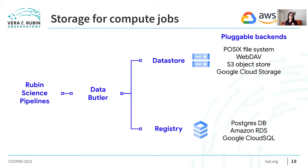The data store is where files are actually stored. The registry is technically a Postgres database where we store metadata about the data including provenance and processing information, allowing us to label and tag data. On the cloud, we can use managed database services — for example, Amazon RDS or Google Cloud SQL — which provides a way to easily have a database instance ready for our compute jobs.